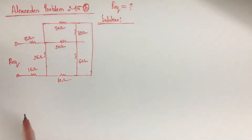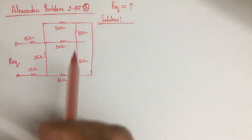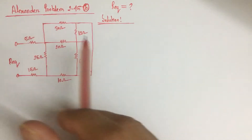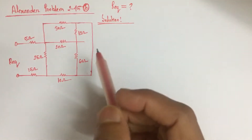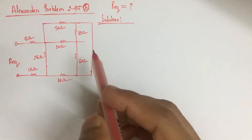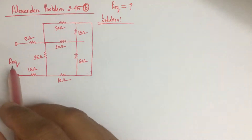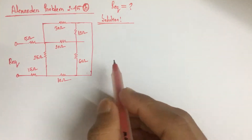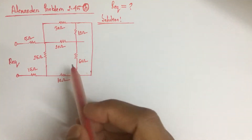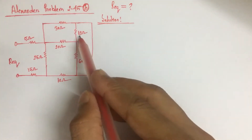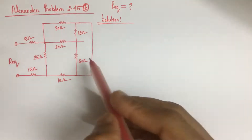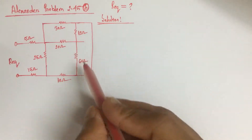Hi viewers. We will solve problem 2.45B from Alexander. Here we have to identify the equivalent resistance Req between these two points. From the circuit, we see that the 12 ohm resistance and 60 ohm resistance are in parallel.